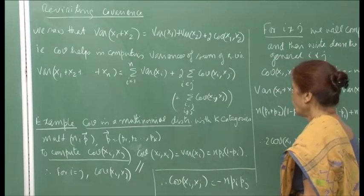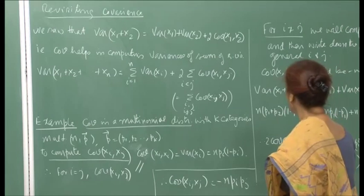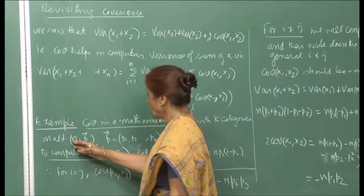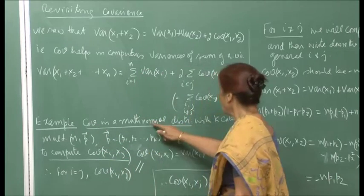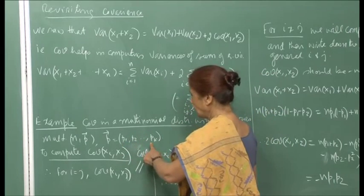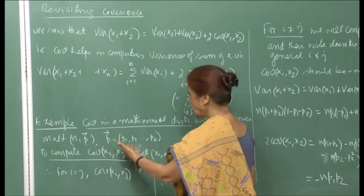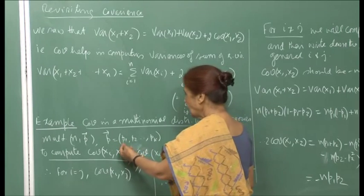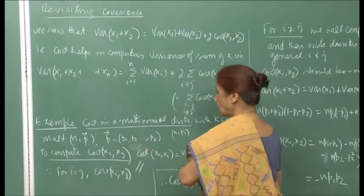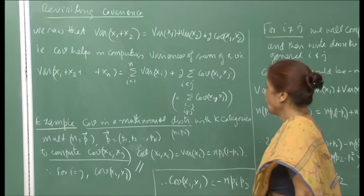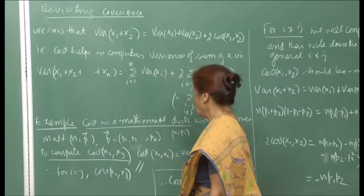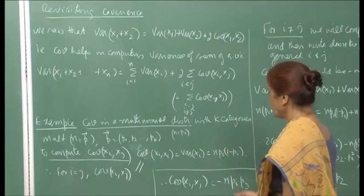Here is an interesting example showing how to use these covariance properties. Consider the multinomial distribution with k categories and n objects. The probability of success in each category is p₁, p₂, ..., pₖ. We saw that each category's successes behave like a binomial. So Xᵢ is Binomial(n, pᵢ), defining the multinomial distribution Mult(n, p⃗) where p⃗ = (p₁, p₂, ..., pₖ).